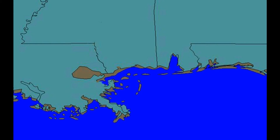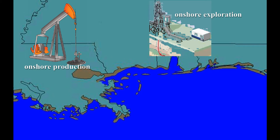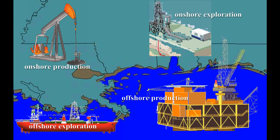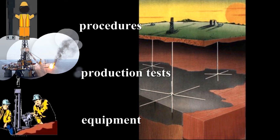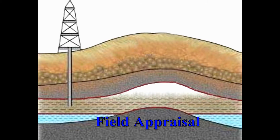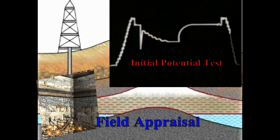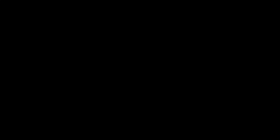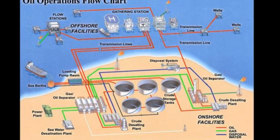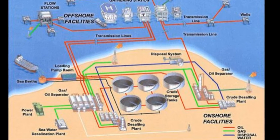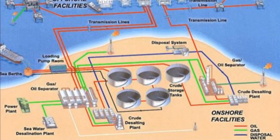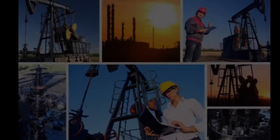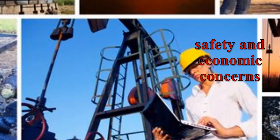Where needed, we'll highlight the similarities and differences between onshore and offshore field development. Starting with onshore, we'll describe the equipment, the production tests, and procedures used for a field appraisal and emphasize some factors that must be present if the exploration field is to become a production field. Next, we'll describe the equipment and procedures needed for site development of service facilities that need to be in place as the field is brought into production. We'll discuss those facilities that need to be on site and some safety and economic concerns that might affect the placement of these facilities.